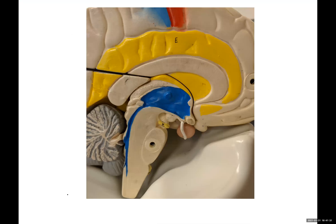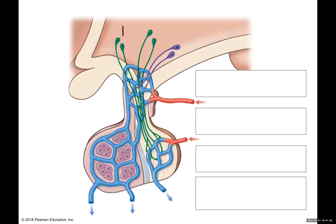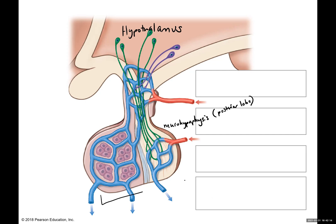Looking at this diagram, we have the hypothalamus here with green-colored neurons extending down into the neurohypophysis. These are the neurons producing ADH and oxytocin, which are released into a capillary in the neurohypophysis. Remember, the neurohypophysis can also be called the posterior lobe of the pituitary gland. So neurohypophysis and posterior lobe of the pituitary are the same. And then our adenohypophysis, or anterior lobe of the pituitary, are also the same.